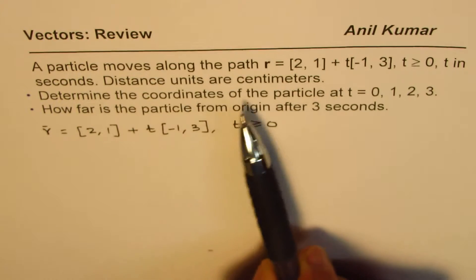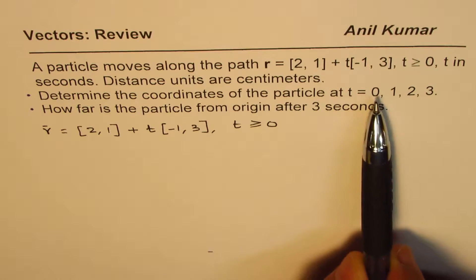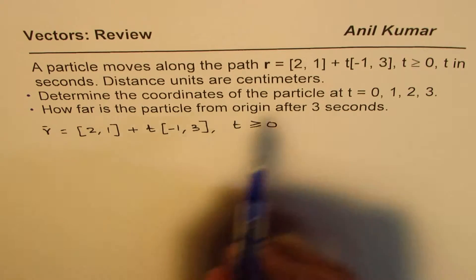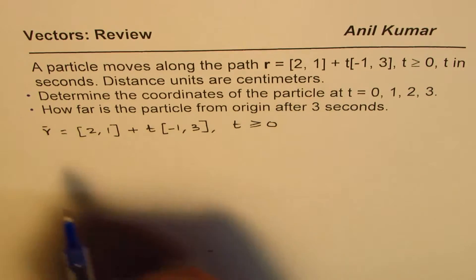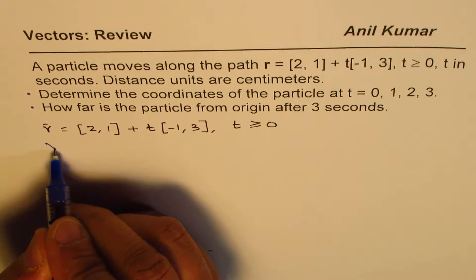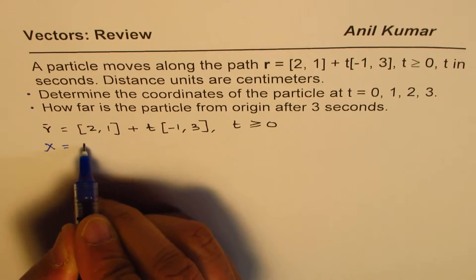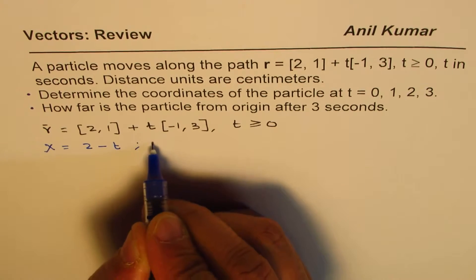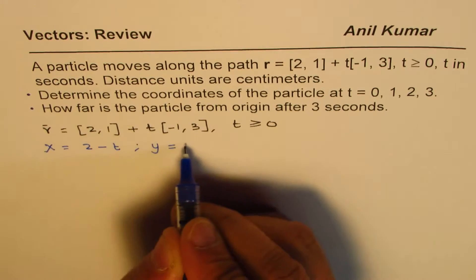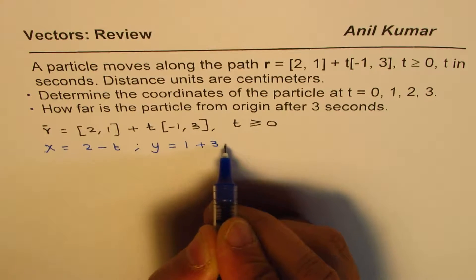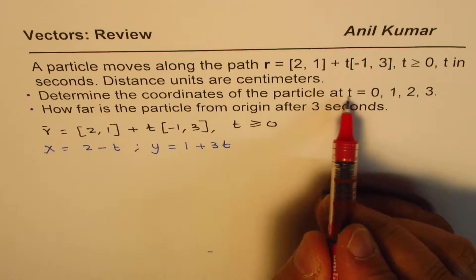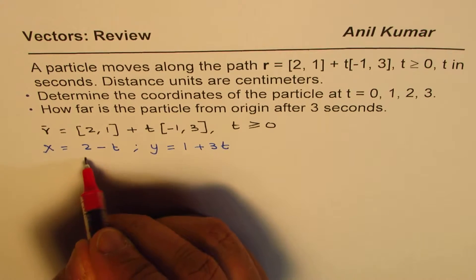Now, determine coordinates of the particle at t equals 0, 1, 2, and 3. So what we can also do is we can write this equation in terms of x and y coordinates. So from here we can write that the x coordinate is 2 minus t and y coordinate is 1 plus 3t. Now, to write down positions for different values of t, we can actually make a table.